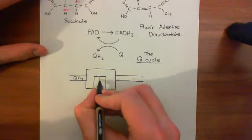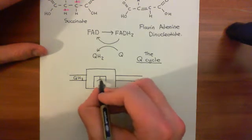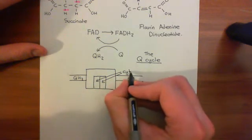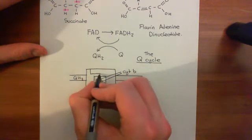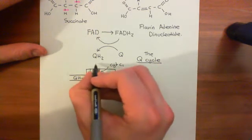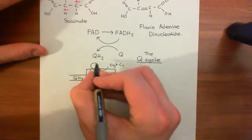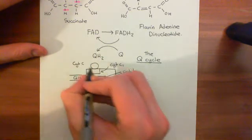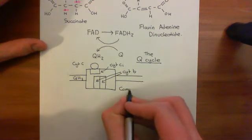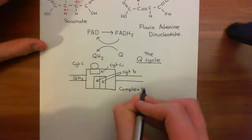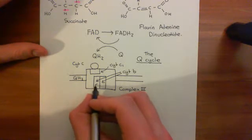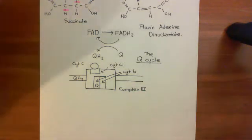Within complex 3 there are two cytochrome B molecules. There is also a cytochrome C1, and matched up here is a cytochrome C molecule. But the cytochrome C molecule isn't part of complex 3 — it's going to interact with complex 3. Also, what's going to come in is a molecule of ubiquinol.